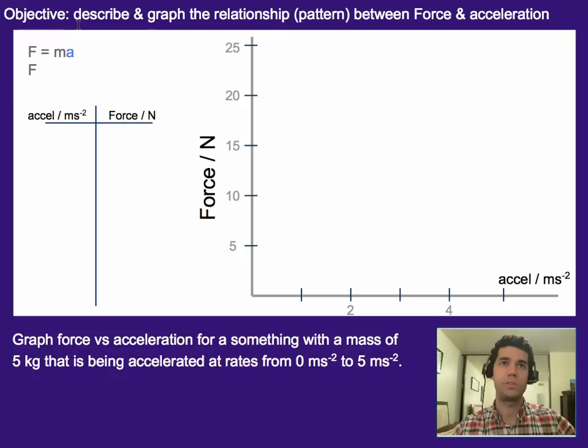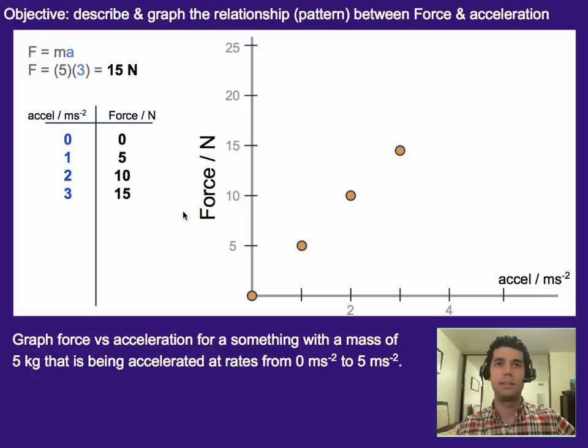Our equation we're starting off with is F equals ma. So we plug into that 5 for the mass, 0 for the acceleration for the first one, and that gives us a value of 0. We can quickly plug in for the next one and see that the next force would be 5 newtons, the next one would be 10, the next one 15, 20, and then 25.